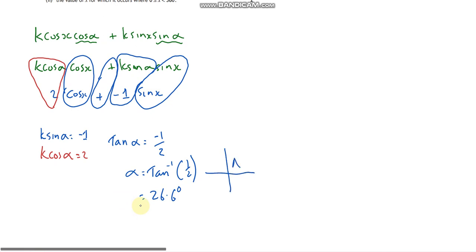...CAST diagram and say okay, well sine was negative, so sine negative is going to go in here. Cos is positive, so that's here. And tan was negative, so tan would be negative here and here. So it's the fourth quadrant that I'm after, so my alpha is going to be 360 take away 26.6.